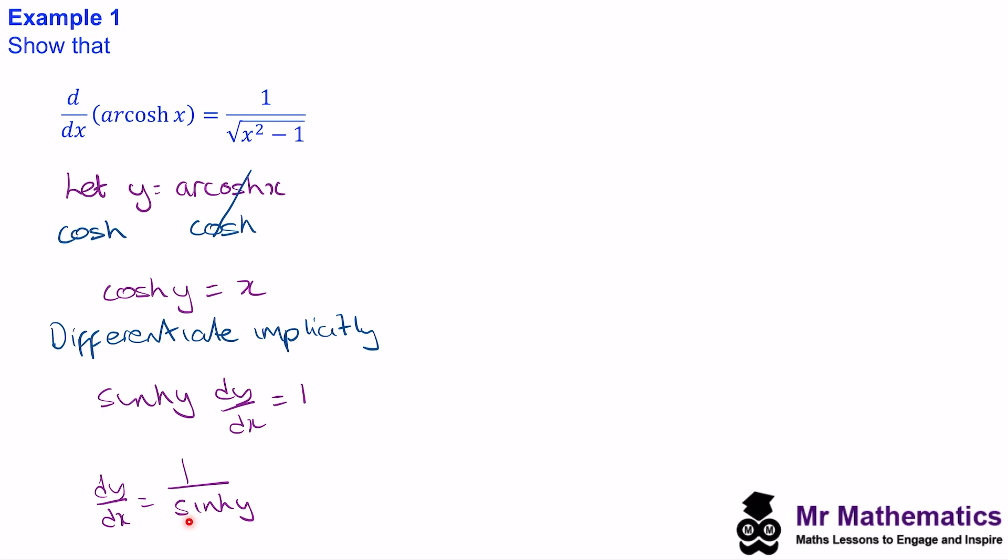So at this point, we need to be able to write sinh of y in terms of x. And to do this, we can use a Pythagorean hyperbolic identity.